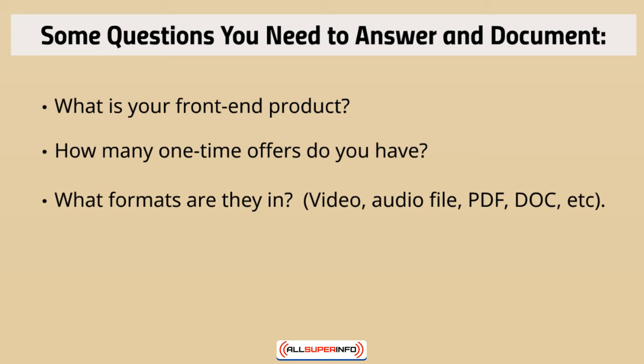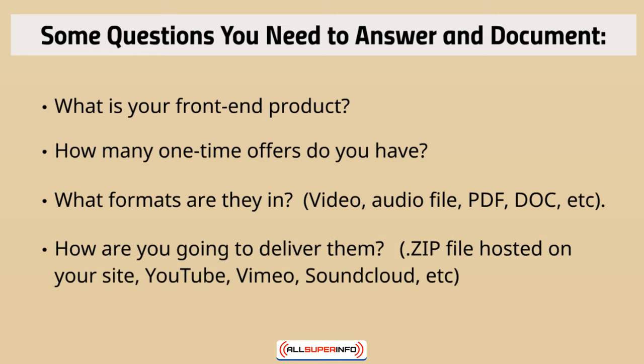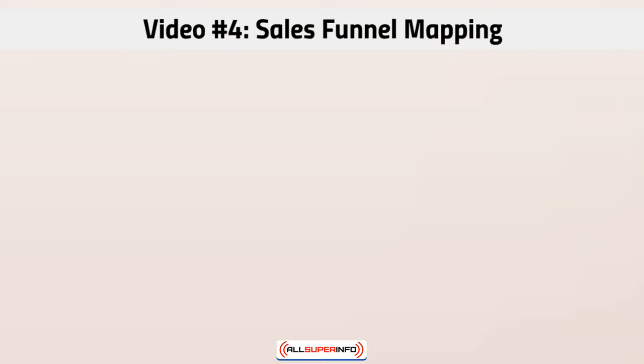Think about what formats your products are in — video, audio, PDF, or doc format. If they're video, are you uploading to YouTube or Vimeo for hosting, and then embedding that on your download page? You want to have a clear idea of this so that when you create your download page and sales page — which we're assuming you already have — it will be easier. Delivery options include zip files, YouTube, Vimeo, or SoundCloud.